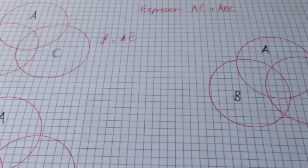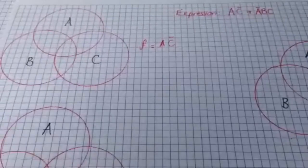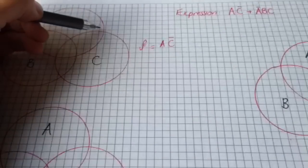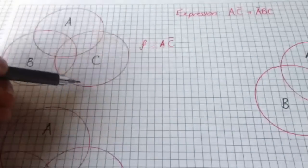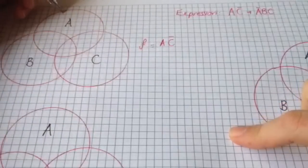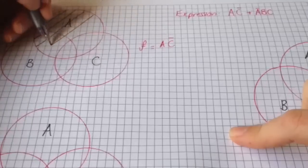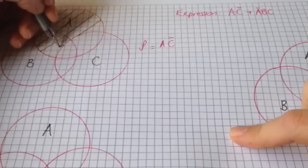Let's look at how we fill this in. With this particular diagram, we know that we want A but not anything to do with C.